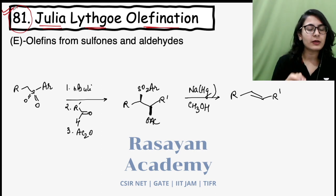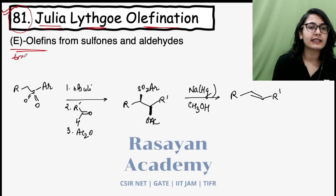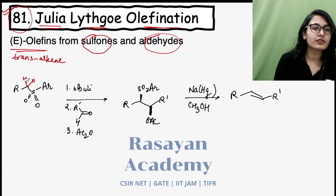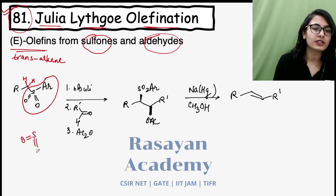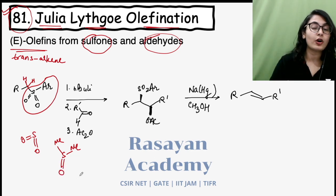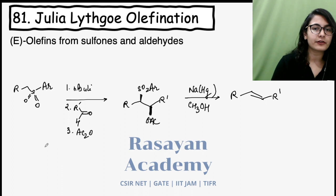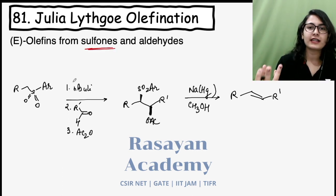Julia-Lythgo Olefination is a two-step reaction. You are going to get E-olefin, that is your trans-alkene, from sulfones and aldehydes. As you can see, I am having an alkyl sulfone which has alpha hydrogens. What is a sulfone? When sulfur has two oxygens, it is called a sulfone. For comparison: dimethyl sulfide has no oxygen, dimethyl sulfoxide has one S=O, and dimethyl sulfone has two S=O groups.